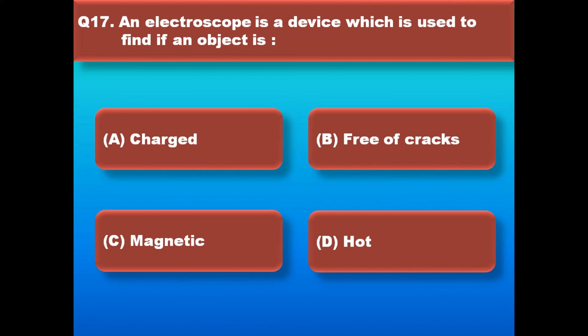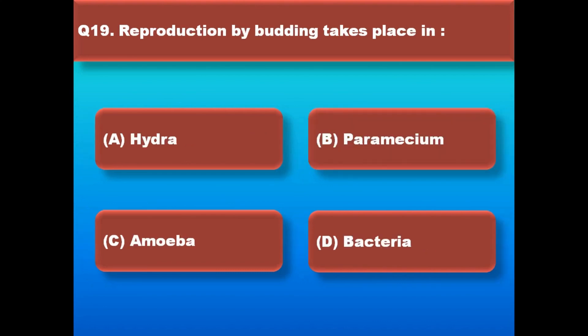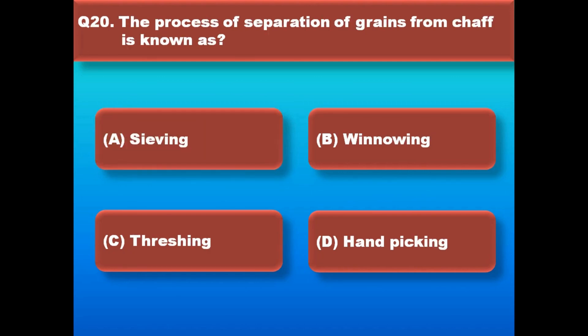An electroscope is a device which is used to find if an object is charged. Potable water is the water which is pure and fit for drinking. Reproduction by budding takes place in hydra. The process of separation of grains from chaff is known as winnowing. Thanks for watching.